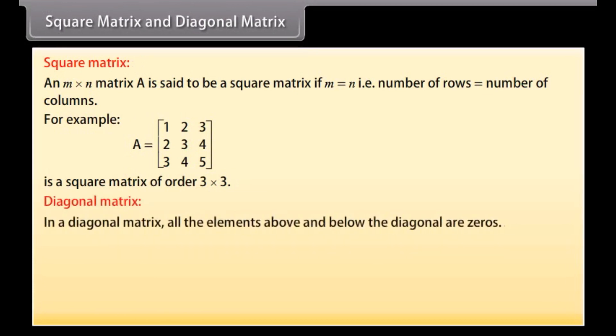Diagonal matrix. In a diagonal matrix, all the elements above and below the diagonal are zeros. For example, B is a diagonal matrix.